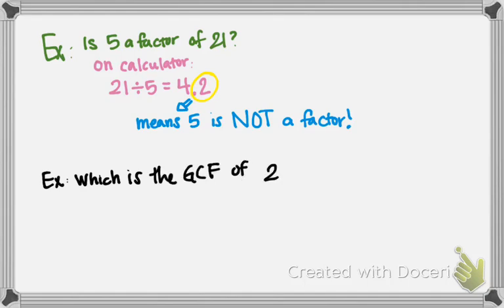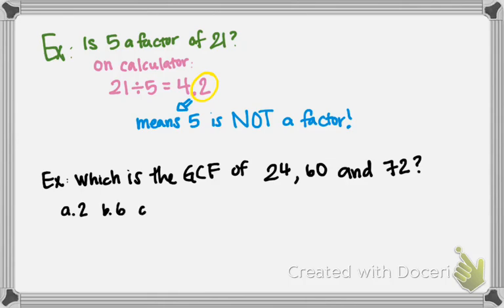So here's another example. Which is the greatest common factor of 24, 60, and 72? So we've been dealing with this idea of factor. So now we're going to bring in greatest and common into the definition. So what's the greatest common factor of 24, 60, and 72?